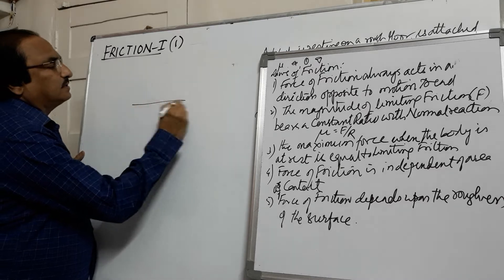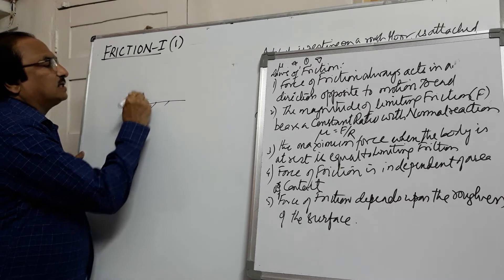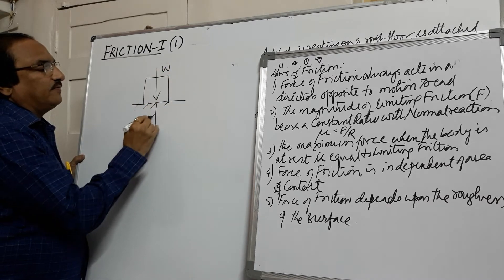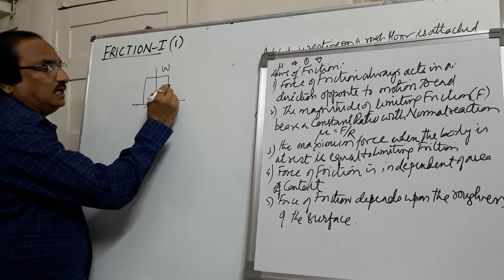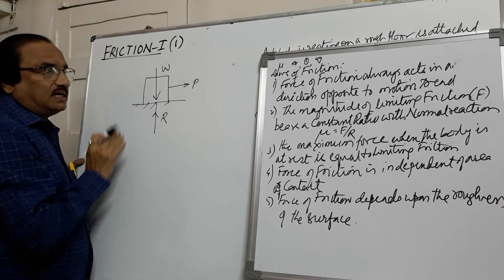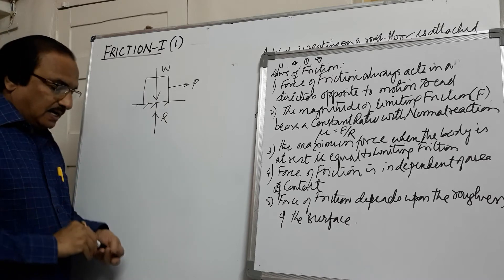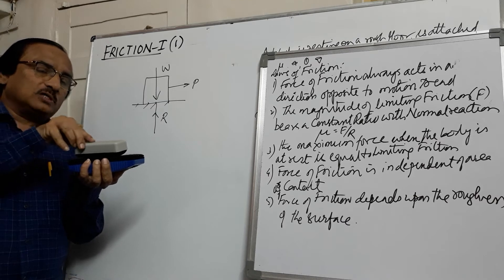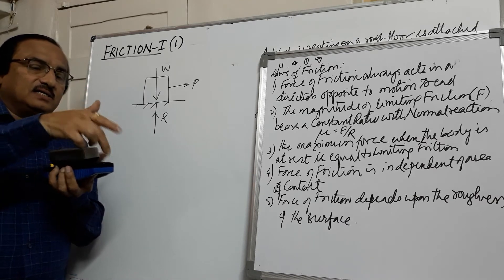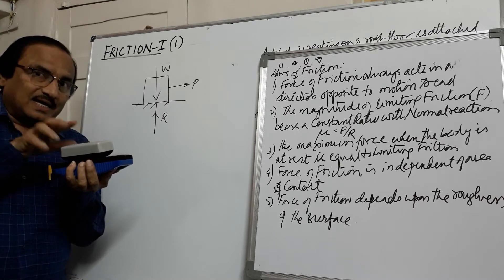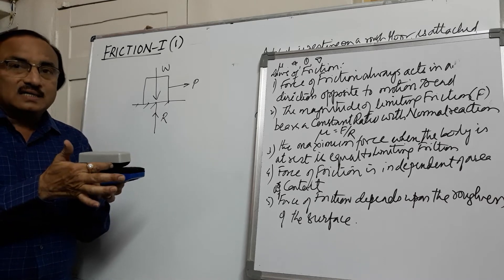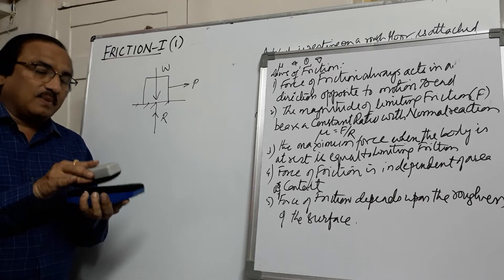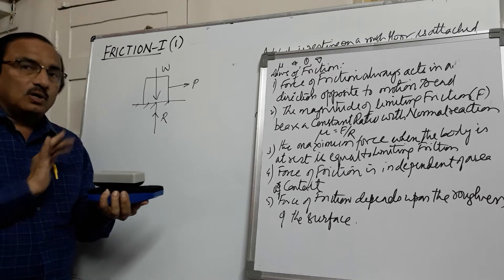If I take a rough surface and keep a body on it, W is the weight of the body. Since there is contact, there will be a reaction acting perpendicular to the surface. If I apply force P towards right, the body has tendency to move towards right. There is a resistance offered at the surface of contact against the movement of the body. This resistance offered at the surface of contact, we call it as friction. Friction is the resistance offered by the surface at the contact when the body tends to move over it.